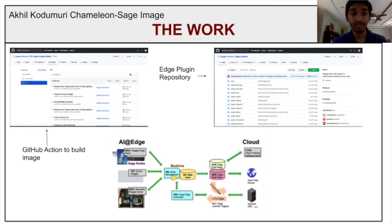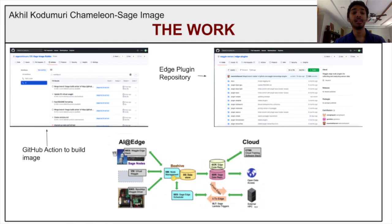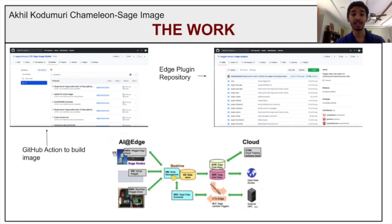Sage Edge plugins is another feature that I included in the Sage image. The Sage Edge plugin repository is helpful for people who wish to create their own plugins to use on the edge. The final feature is access to a local Beehive server. Beehive allows users to push and pull sensor data from devices on the edge, and can also be useful in experiments that require data collection or training machine learning algorithms.